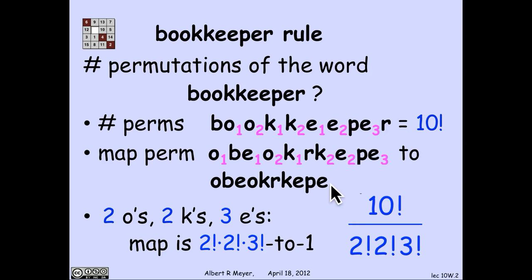That instantly gives us, by the division rule, that the total number of permutations of the letters in the word bookkeeper is 10 factorial over 2 factorial times 2 factorial times 3 factorial.